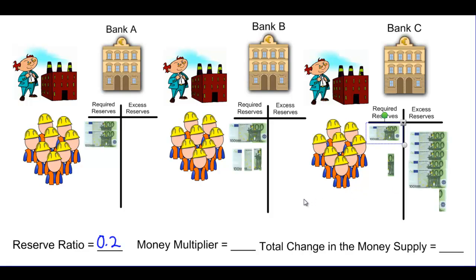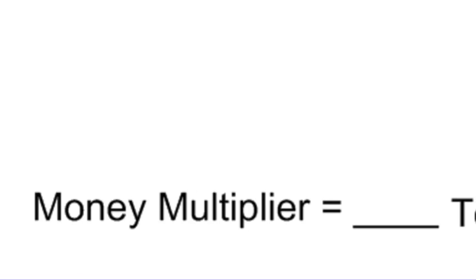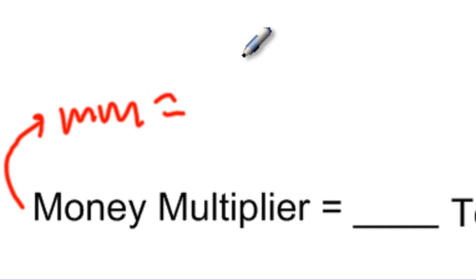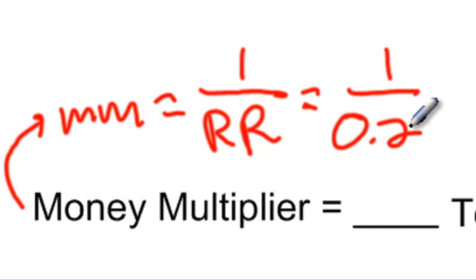How can we say money is being created even though this whole process started with an initial deposit of just 1,000 euros? The money supply in a nation is not simply the base of currency that exists — rather it is a multiple of that monetary base. In this economy there is only 1,000 euros of hard currency, but a nation's money supply includes all money that exists in checking accounts and savings accounts in the banking system. With a reserve ratio of 0.2, there is a multiplier effect on any initial change in deposits. The money multiplier is found by dividing 1 by the reserve ratio: 1 ÷ 0.2 = 5.